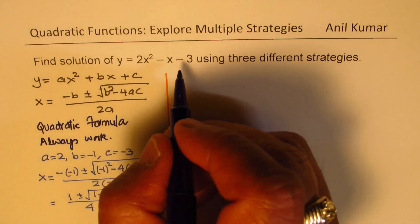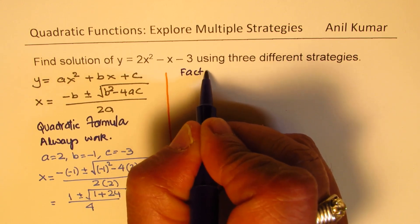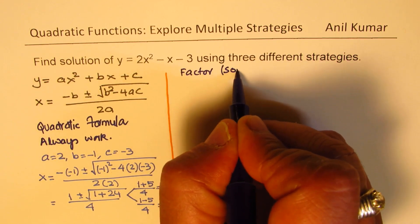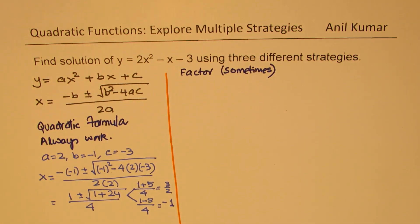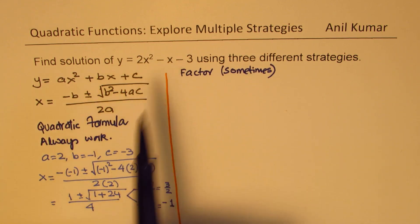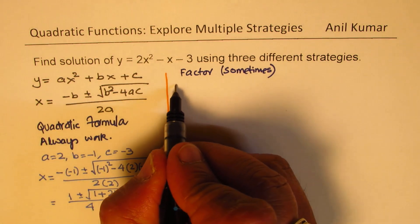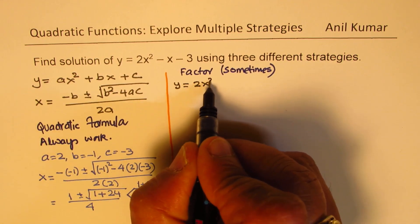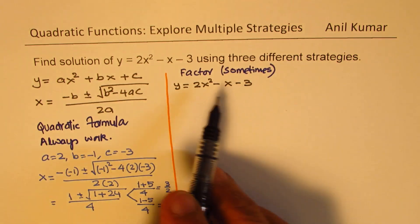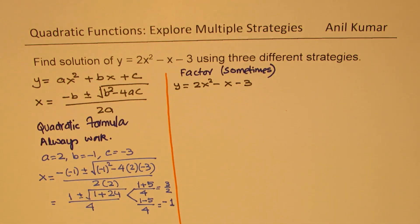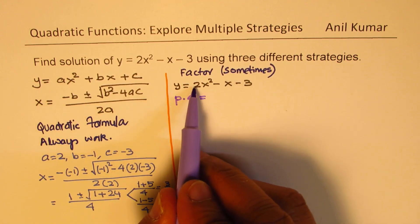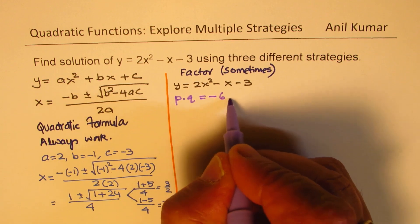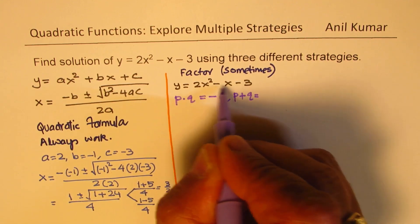Now the second method is factoring. Now this method can be used sometimes, not always. So here we are given the equation which is y equals 2x squared minus x minus 3. So it is a trinomial where we can think about product and sum. So we are looking for two roots whose product is equal to 2 times minus 3 which is minus 6 and whose sum is minus 1.